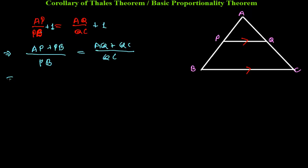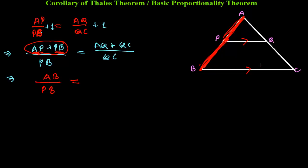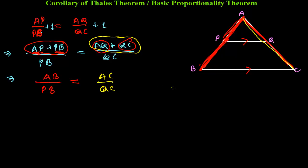Looking at the figure, AP plus PB is simply the whole line AB. So we can write AB/PB on the left. Similarly, AQ plus QC is the whole side AC, so we write AC/QC on the right. The result is AB/PB = AC/QC.